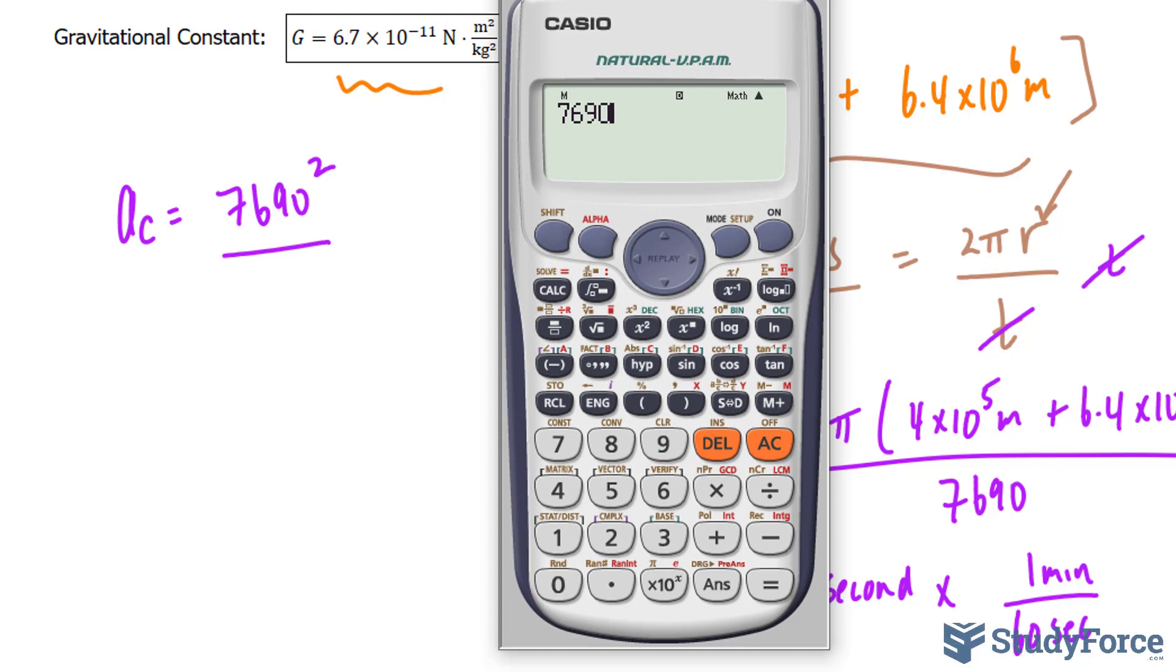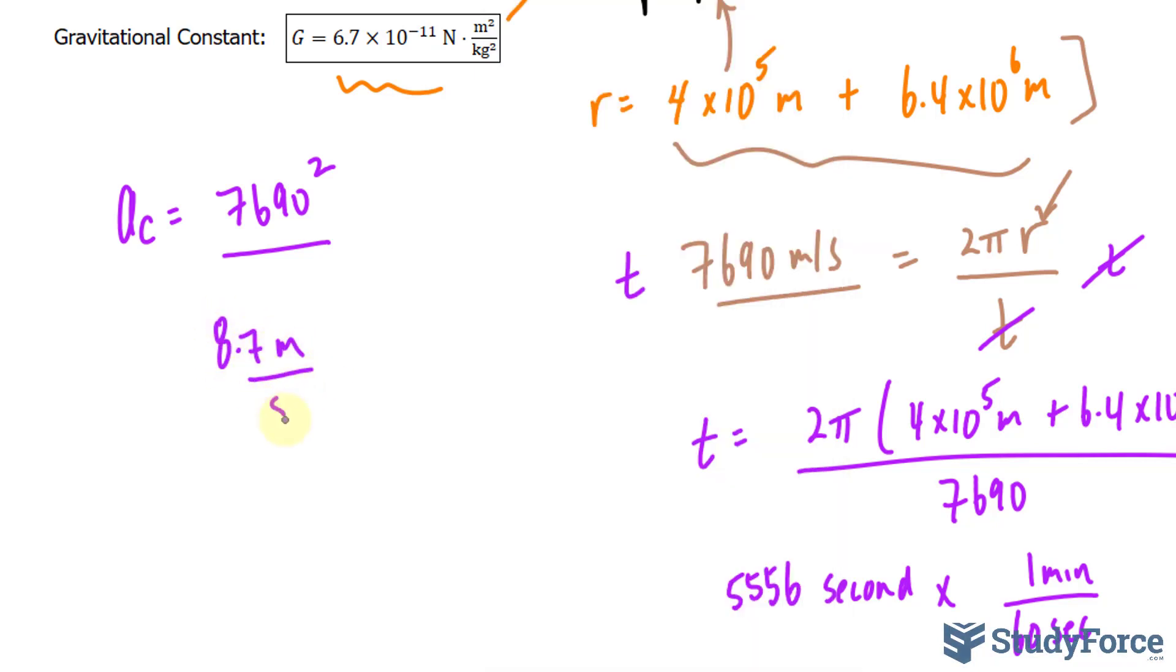7,690 to the power of 2, divided by 4 × 10⁵ plus 6.4 × 10⁶. We get an acceleration of 8.69, which I'll simply round to 8.7 meters per second squared.